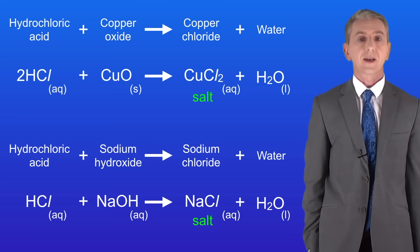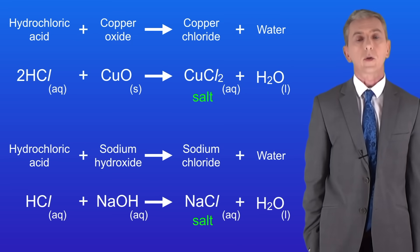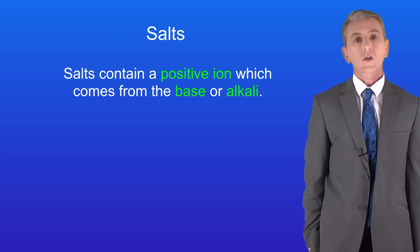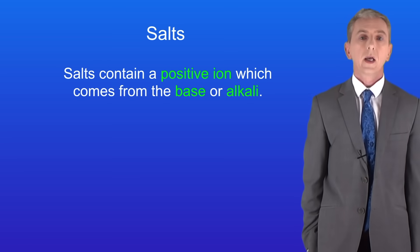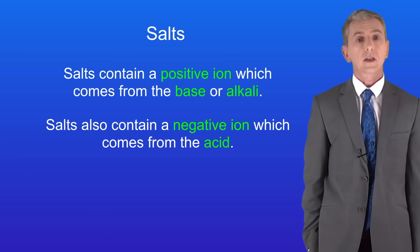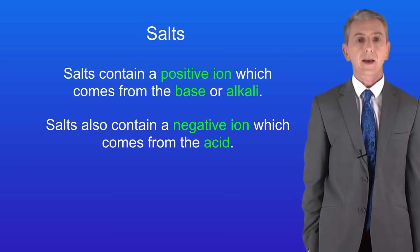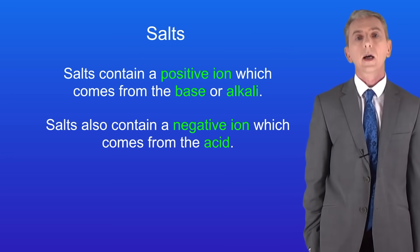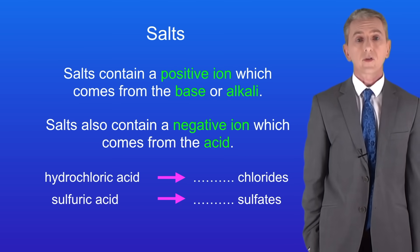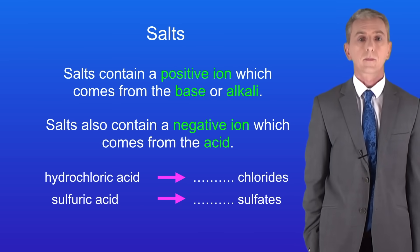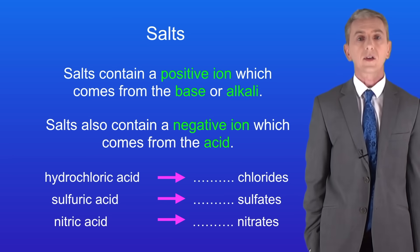In the exam you could be asked to identify the salt from a neutralization reaction. Salts contain a positive ion, which comes from the base or from the alkali, and a negative ion which comes from the acid. You need to learn the negative ions produced by the three acids used most often in chemistry: hydrochloric acid produces chlorides, sulfuric acid produces sulfates, and nitric acid produces nitrates.